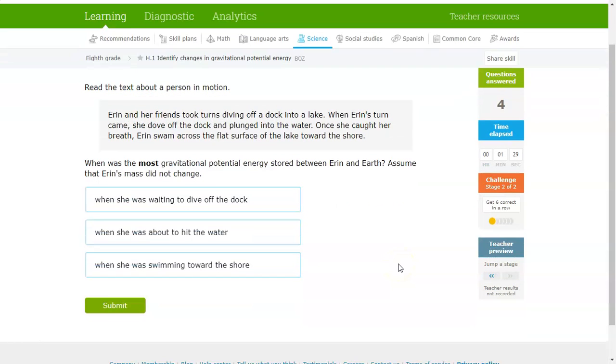Moving on to stage 2. So, this one depends on the questions. You might be able to just answer by reading the answer choices. But if it's not specific enough, you will need to read the passage. So, when was the most gravitational potential energy stored between Aaron and Earth? Because it's the most gravitational potential energy, we have to see the example that gives the greatest distance between Aaron and Earth. Aaron and her friends took turns diving off a dock in a lake. When Aaron's turn came, she dove off the dock and plunged into the water. When she caught her breath, Aaron swam across the flat surface of the lake toward the shore. So, obviously, at this instance, she was probably at the highest spot because she's diving off the dock. So, I would go with this one.